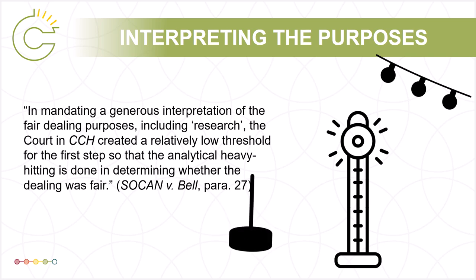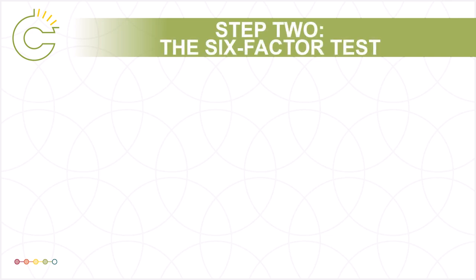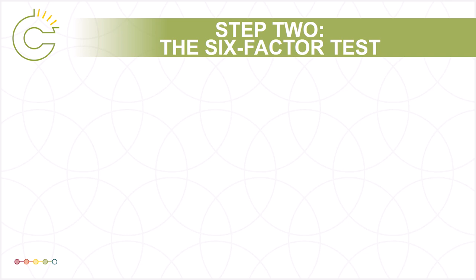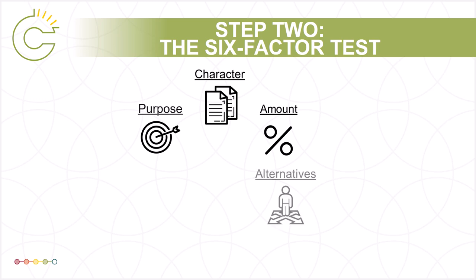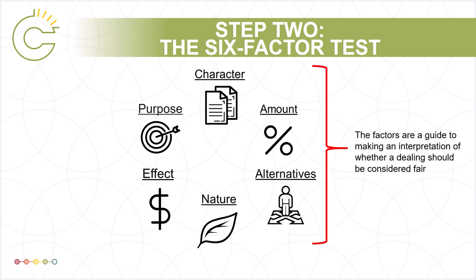So what does this analytical heavy hitting look like? The six factor test is used to assess whether the use of a work can reasonably be considered as fair. The six factors are: the purpose of the dealing, the character of the dealing, the amount of the dealing, alternatives to the dealing, the nature of the work, and the effect of the dealing. Not all factors will apply in all cases, and the factors do not need to be equally weighted. These factors are simply a guide to making an interpretation of whether a dealing should ultimately be considered fair.